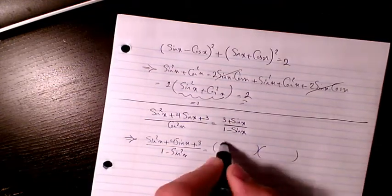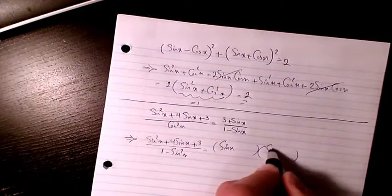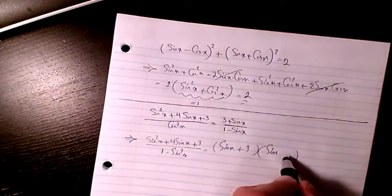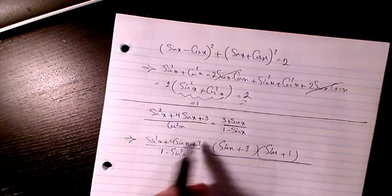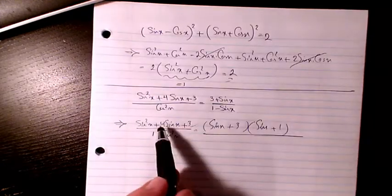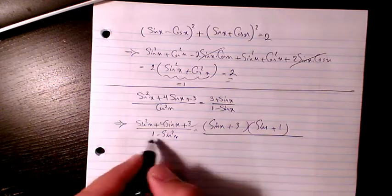If I want to factor it I can write sine x times sine x plus 3 plus 1, based on these two. The product has to be positive 3, the sum has to be positive 4.